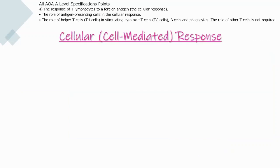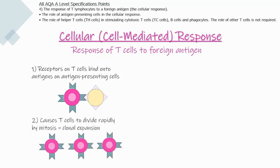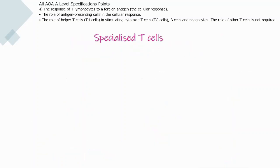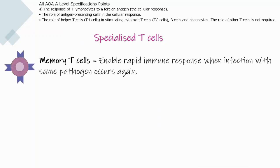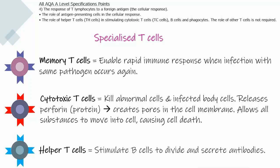The cellular or cell-mediated response is the response of T cells to a foreign antigen. It begins with receptors on T cells binding to the antigen on antigen-presenting cells, causing T cells to divide rapidly by mitosis — a process called clonal expansion. The cloned T cells differentiate into memory T cells, which enable a rapid immune response upon re-infection, cytotoxic T cells, which kill abnormal and infected body cells by releasing perforin to create pores in the cell membrane causing cell death, and helper T cells, which stimulate B cells to divide and secrete antibodies.